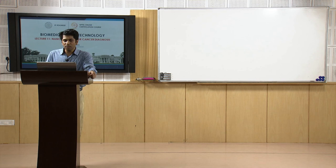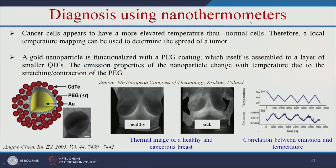We can also diagnose using nanothermometers. Cancer cells appear to have more elevated temperature than normal cells, so local temperature mapping can be used to determine the spread of tumor. Cancer cells have more metabolism and more heat generation at a particular location. We can make a gold nanoparticle functionalized with polyethylene glycol coating, and on top of that add quantum dots.